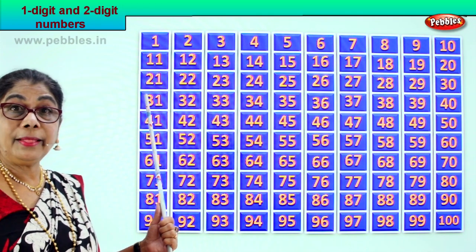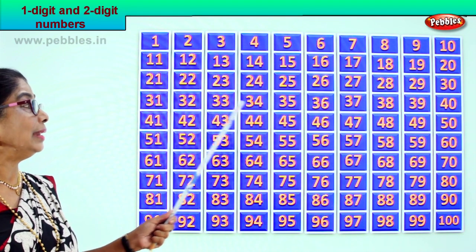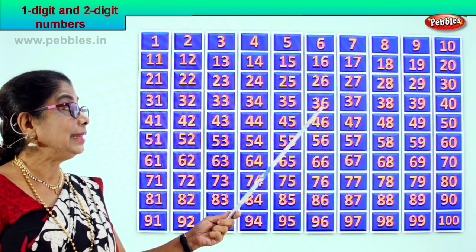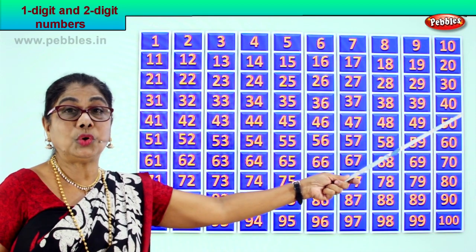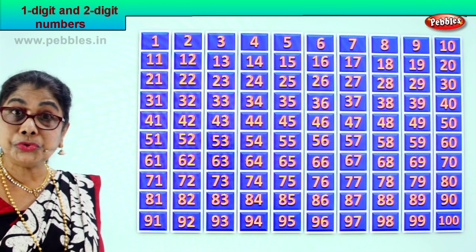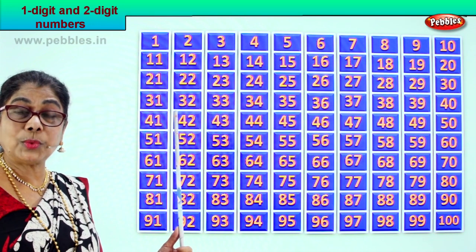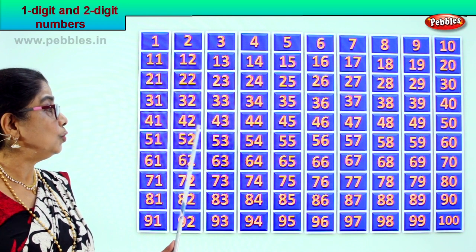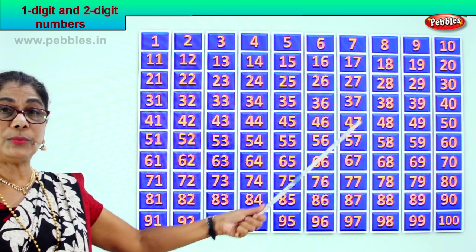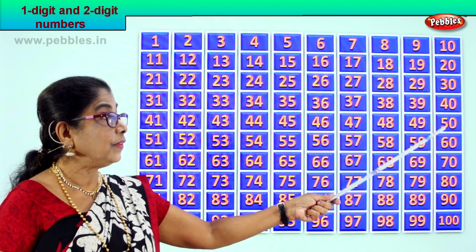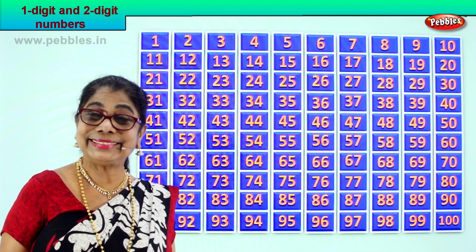Let's look at the next set of numbers. 31 has 3 tens and 1 one. It goes on: 31, 32, 33, 34, 35, 36, 37, 38, 39, and 40 — which is 4 tens and 0 ones. All these are also two-digit numbers. Then 41, 42, 43, 44, 45, 46, 47, 48, 49, and 50 — 5 tens and 0 ones. 41 to 50, again all two-digit numbers.